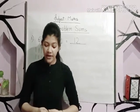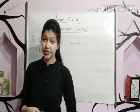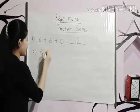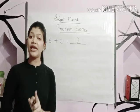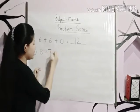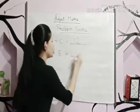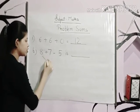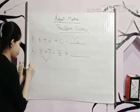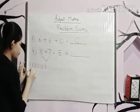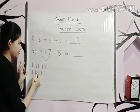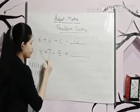Second one: eight plus seven minus five. This one is a little tricky. First we add eight plus seven. Drawing eight lines and seven lines, counting all gives fifteen. So eight plus seven equals fifteen.